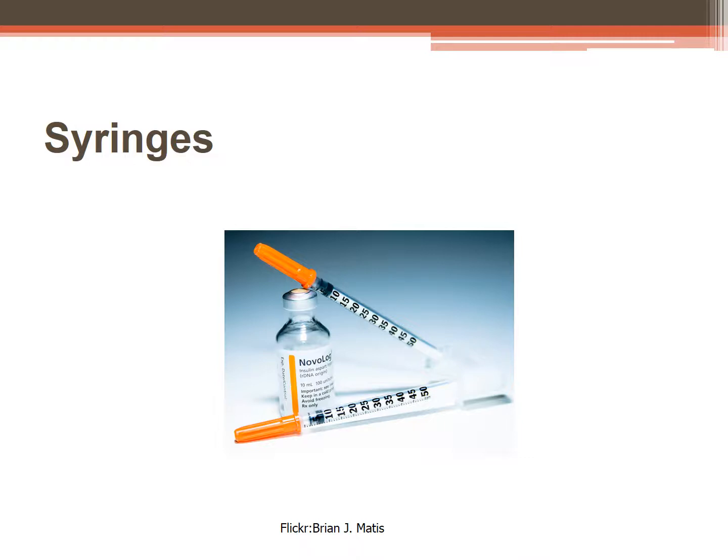The TB syringe only holds 1 mL, which allows for very small amounts to be measured correctly. An insulin syringe is calibrated in units and always has an orange cap on it. Insulin syringes should never be used for anything other than insulin. We will choose a syringe based on the amount and the calibrations needed for a medication.